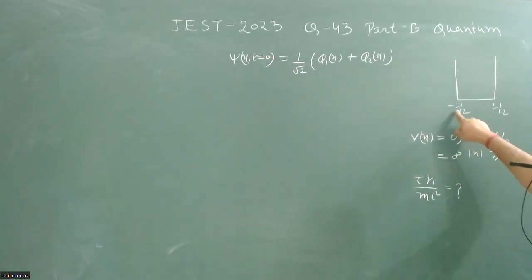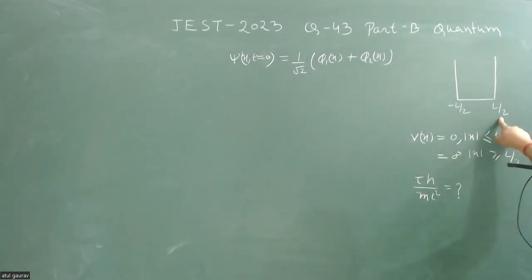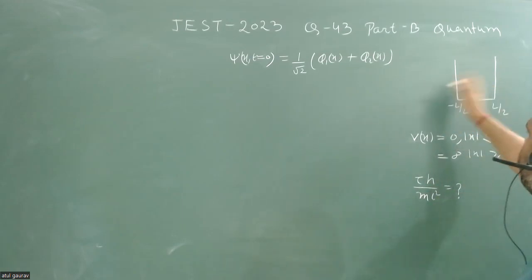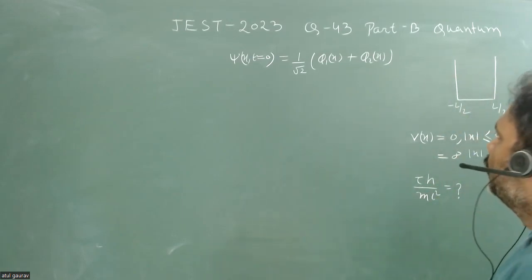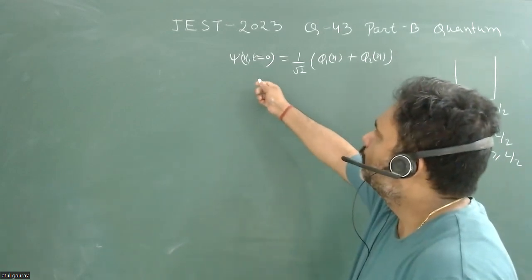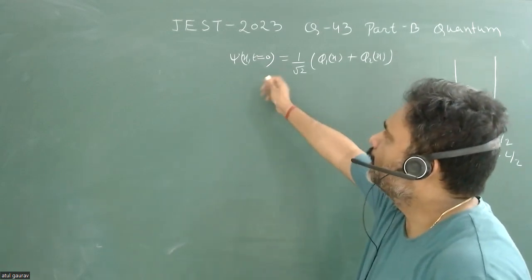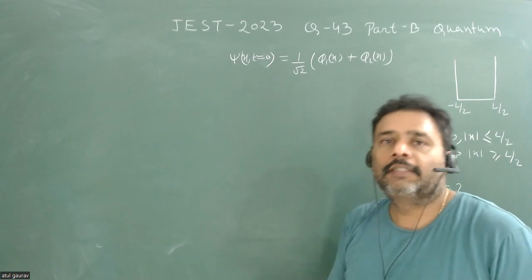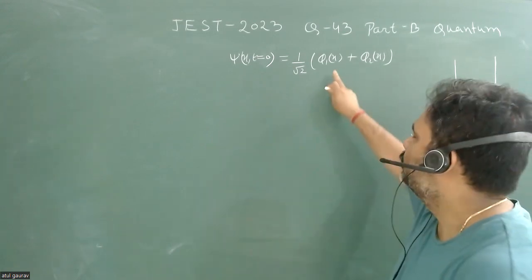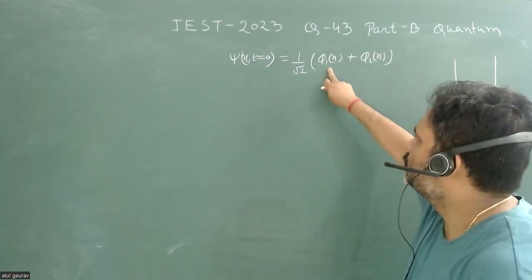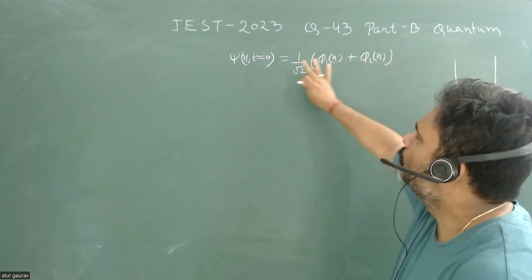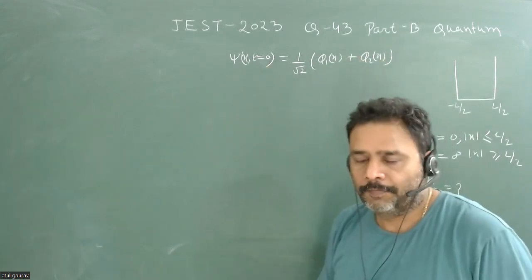It is also given that there is a state of the particle which is a superposition of the ground state and the first excited state. The ground state is φ1 and the first excited state is φ2, and this is the superposition state at t = 0.